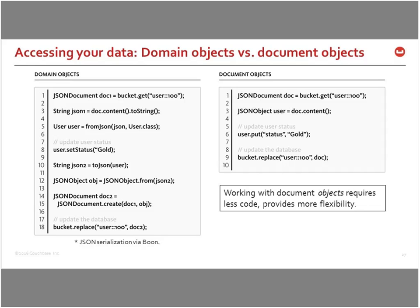Once connected, you choose whether to treat documents as plain strings or as JSON objects. Treating them as strings requires building your own serialization and deserialization logic inside the application. Dealing with JSON objects using standard JSON libraries lets you add, update, or remove attributes directly, resulting in less code, less overhead, and much more flexibility.